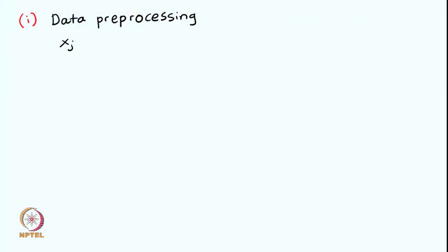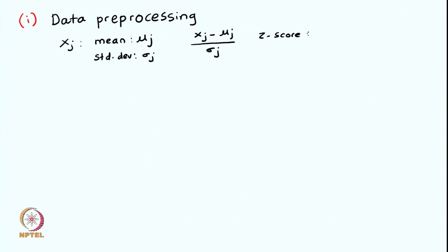So how do we exactly normalize the data? We will look at one of the techniques for normalization called z-score normalization. What happens is that for a particular feature, let us say feature x_j, we compute the mean, let us call it mu_j, and the standard deviation, which is sigma_j. Then we calculate the normalized value: we subtract that value from the mean and divide it by the standard deviation. This particular formula gives us the distance of the point with respect to the mean in terms of standard deviations. This is called z-score normalization and it brings the feature x_j in the range approximately minus 3 to plus 3.